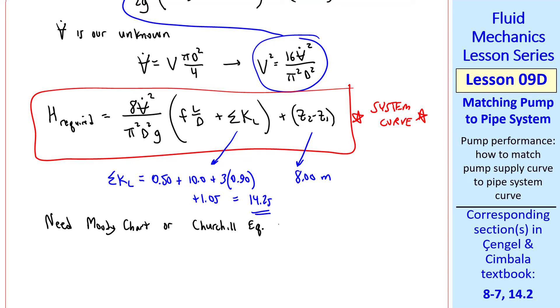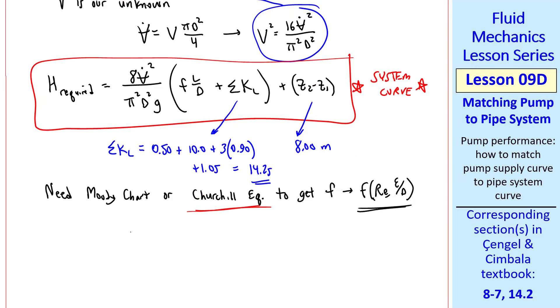We need the Moody chart, or the Churchill equation, to get F, where F is a function of Reynolds number and epsilon over D. I'll use the Churchill equation, and as usual, Reynolds number is rho Vd over mu. For a given volume flow rate, we can calculate V, just the square root of this. Then we can get Reynolds number, we know the roughness and the diameter, so we can get the Darcy friction factor at any V dot.